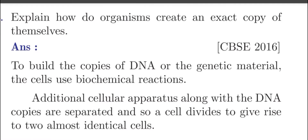Question 1: Explain how do organisms create an exact copy of themselves? Answer: To build the copies of DNA or the genetic material, the cells use biochemical reactions. Additional cellular apparatus along with the DNA copies are separated, and so a cell divides to give rise to two almost identical cells.